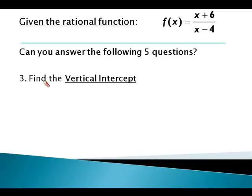So back to the original question: Find the vertical intercept. And I went one step further, I listed it as an ordered pair. The ordered pair is 0 comma 3 over negative 2. Remember, input, output.